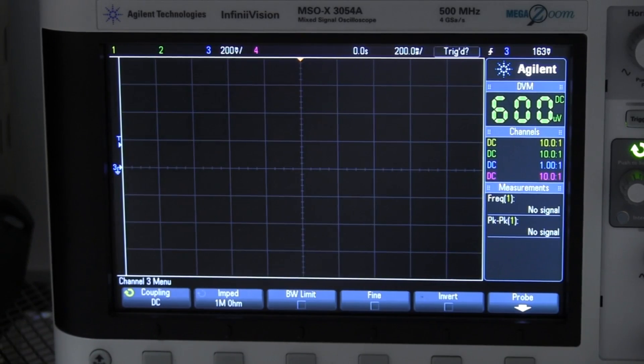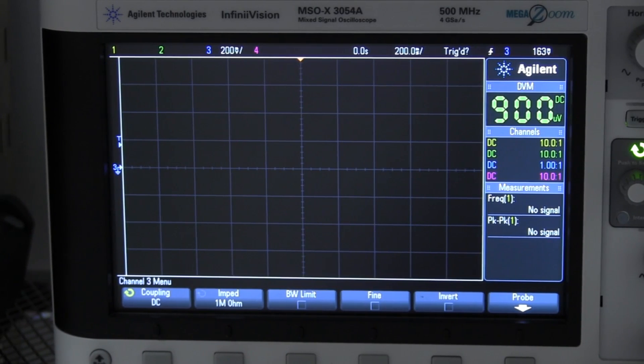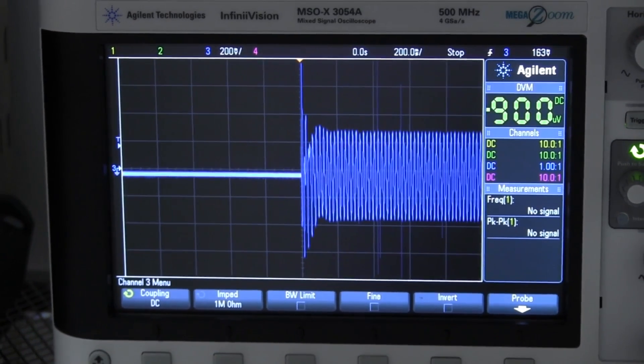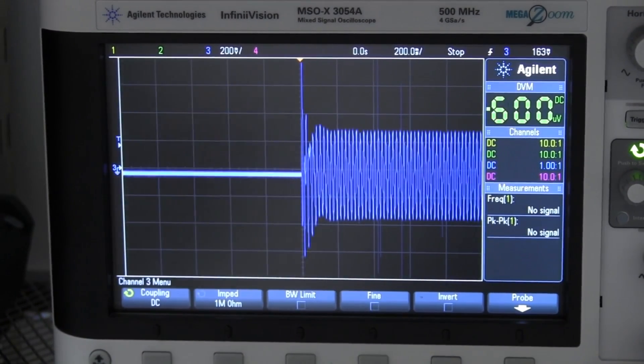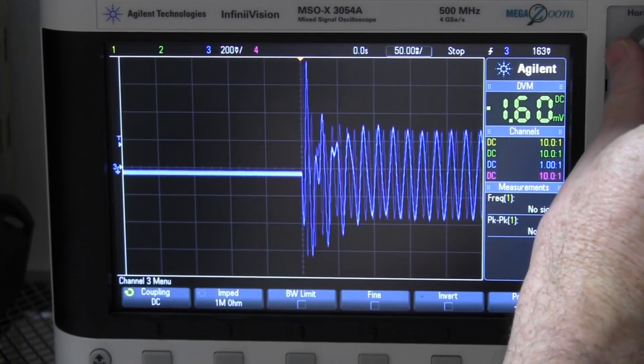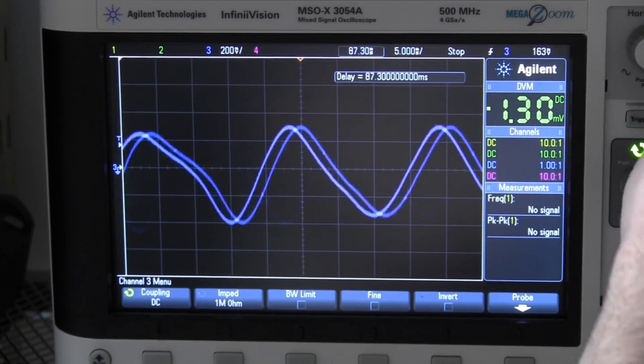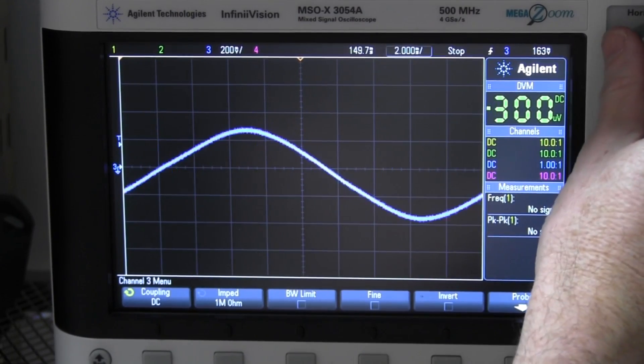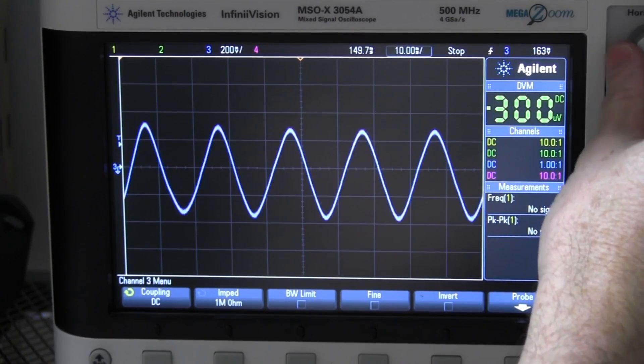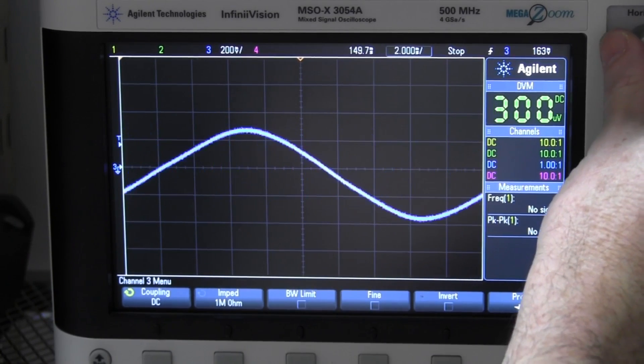And let's capture the current through the power factor correction capacitor across the mains. We expect just a basic sine wave here to be captured. Bang. There it is. There's the switch on. But after that, after that, we expect just the regular mains sinusoidal waveform. That's exactly what we get. Beautiful.